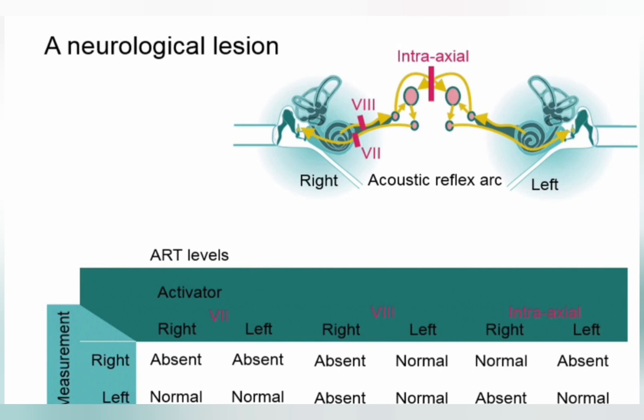If the lesion is at the intra-axial region — at the level of the brainstem where crossing over to the opposite superior olivary complex occurs — then the contralateral reflex will be absent. However, the ipsilateral circuit is still intact. So in brainstem lesions, the ipsilateral reflexes are intact whereas the contralateral reflexes are affected.